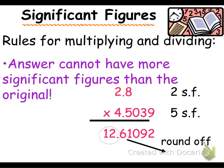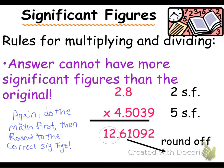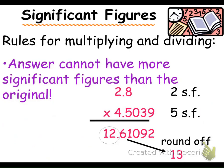For multiplying and dividing, you look at the total number of sig figs in the original values. In this case, 2.8 has 2 sig figs and 4.5039 has 5 sig figs. Your answer cannot have more than the least amount — so it cannot have more than 2 significant figures. Always do the math first, then look at how many significant figures you need. The full calculation gives 12.61092, but since the original only has 2 sig figs, the answer can only have 2 sig figs — that rounds to 13 as the correct answer.